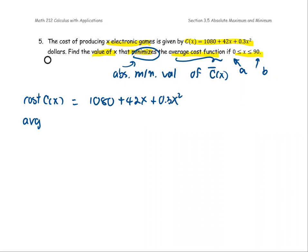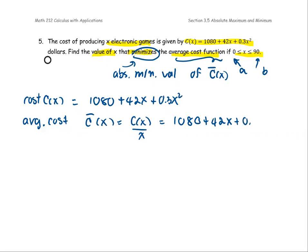The average cost function, which is C-bar, is C(X) divided by X. We can write it as (10,080 + 42X + 0.3X²) all divided by X. You can simplify term by term or leave it in quotient form.